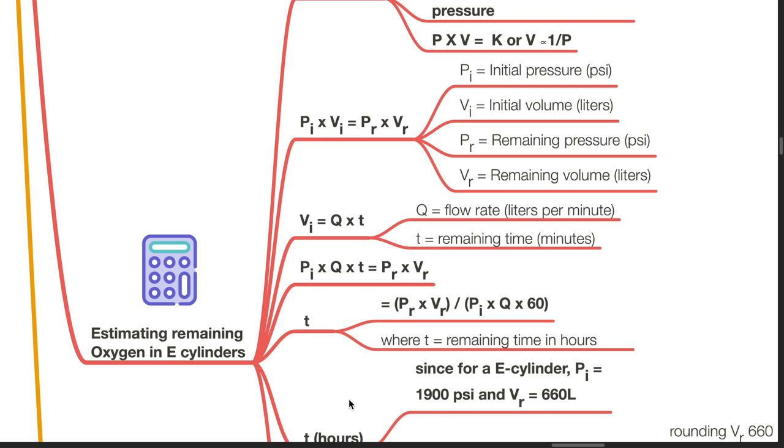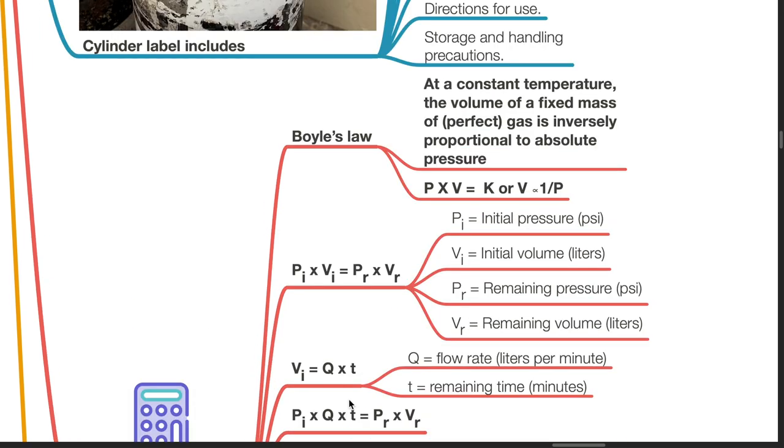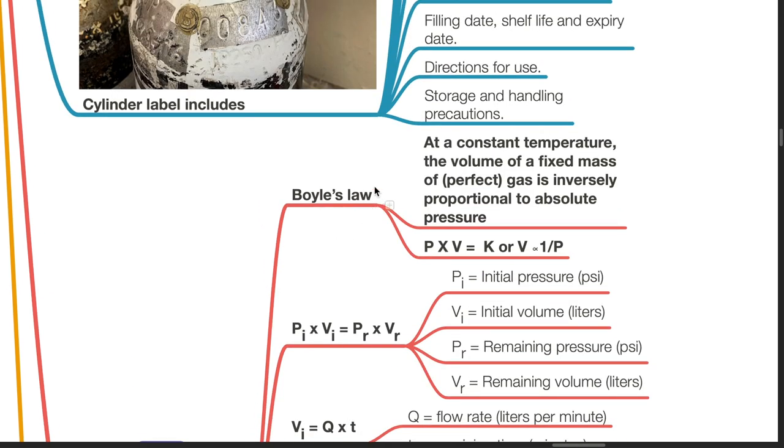Estimating remaining oxygen in E cylinders. Boyle's law states that at a constant temperature, the volume of a fixed mass of perfect gas is inversely proportional to absolute pressure. P times V equals K or V is proportional to 1 divided by P.